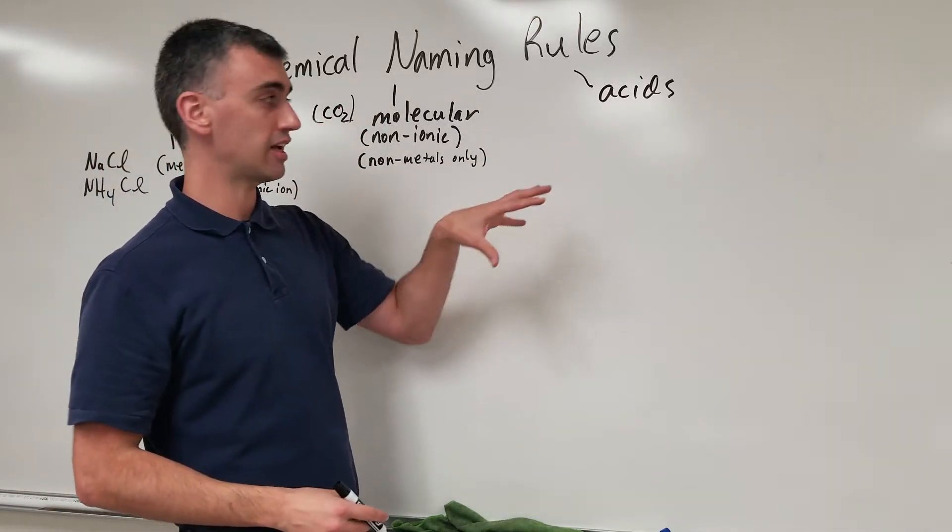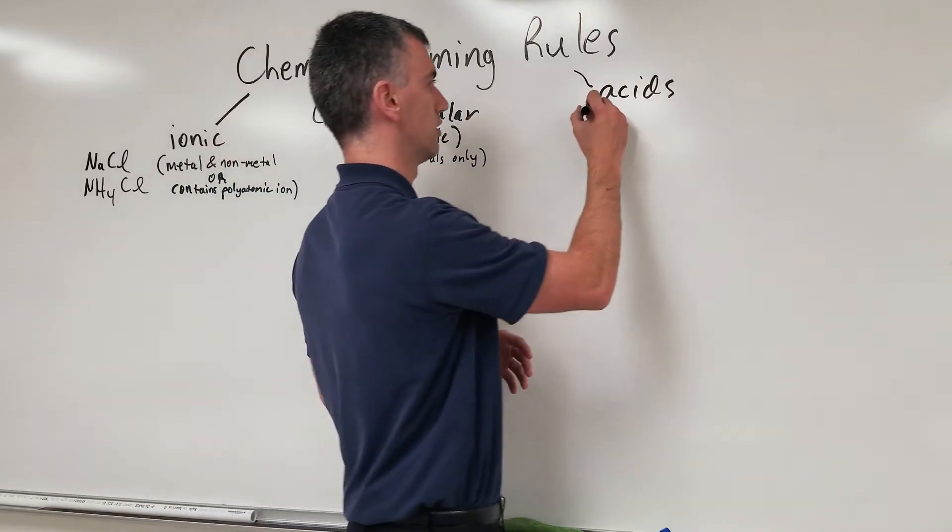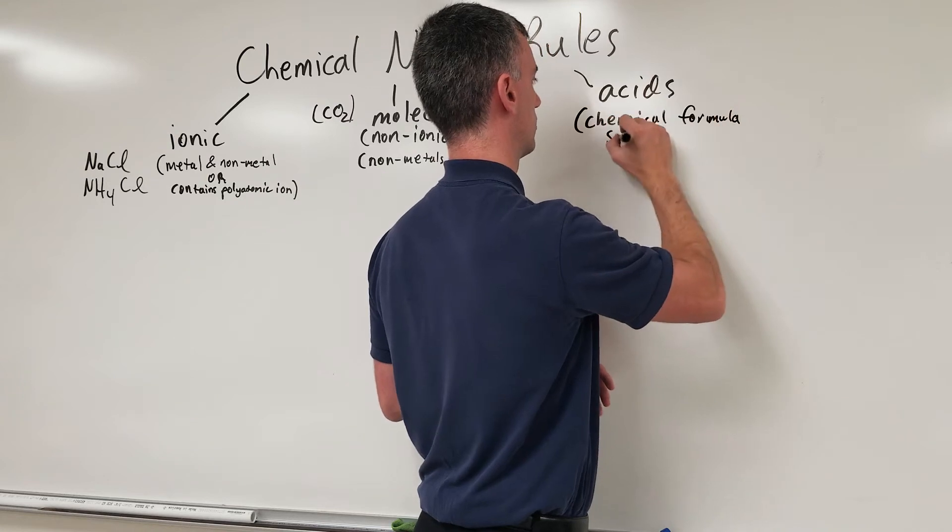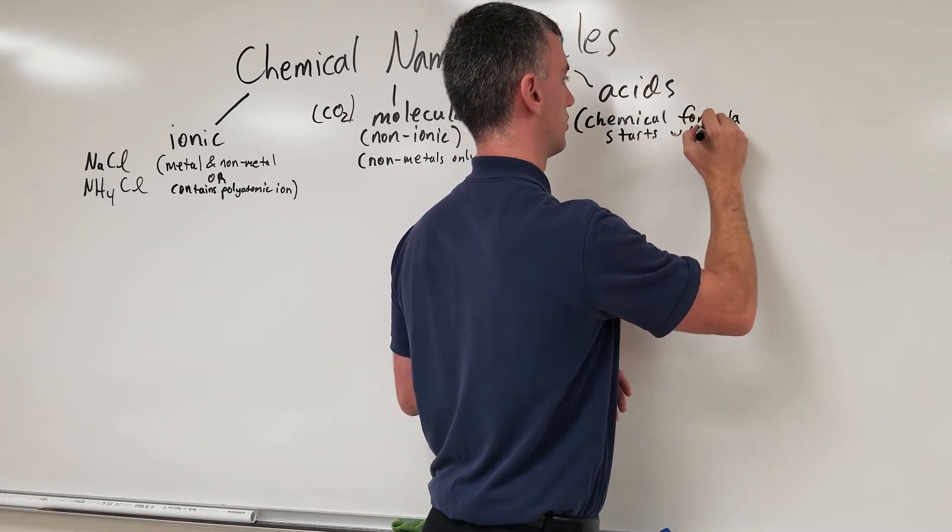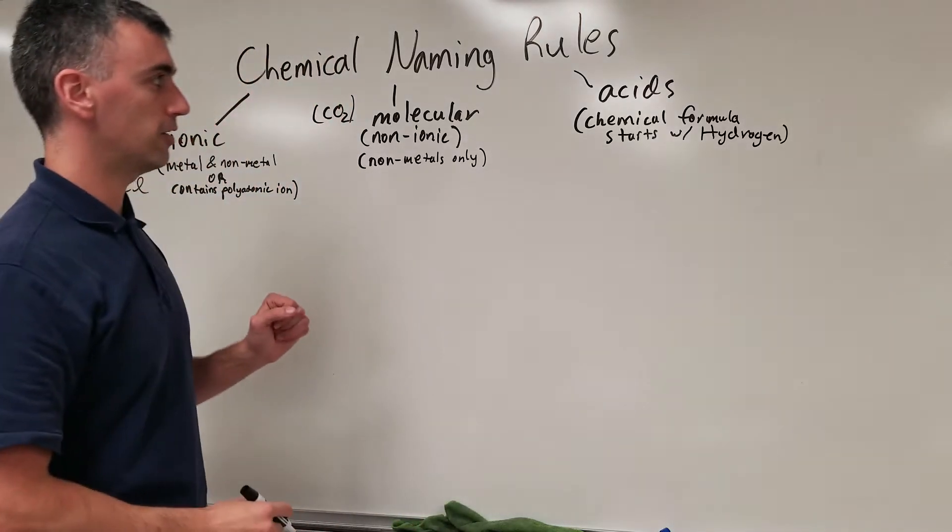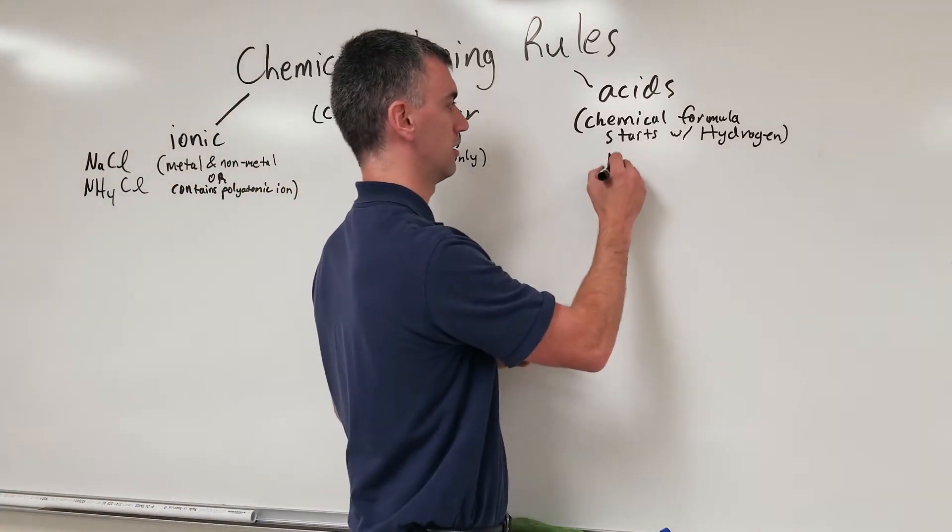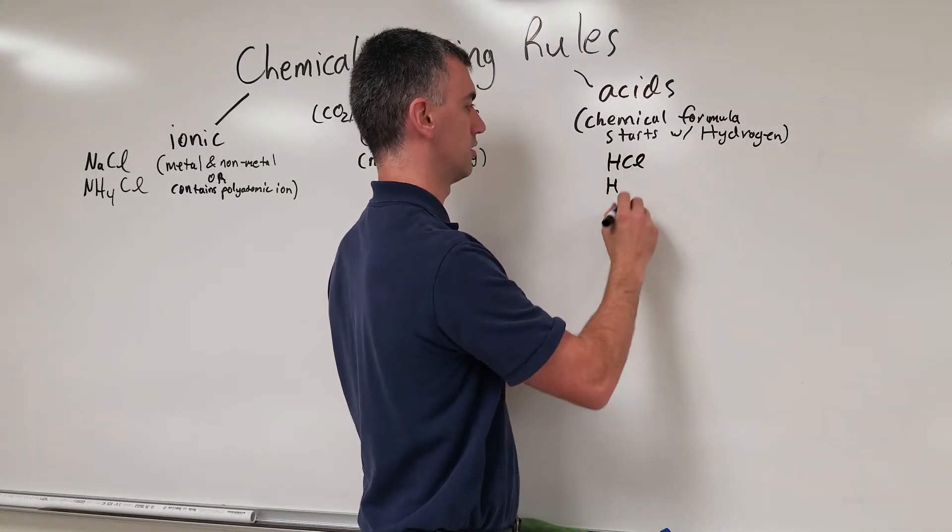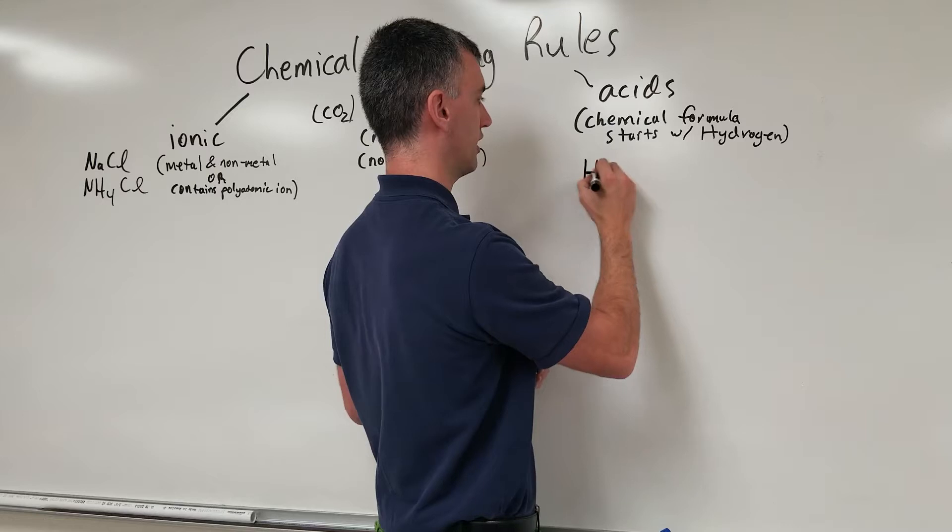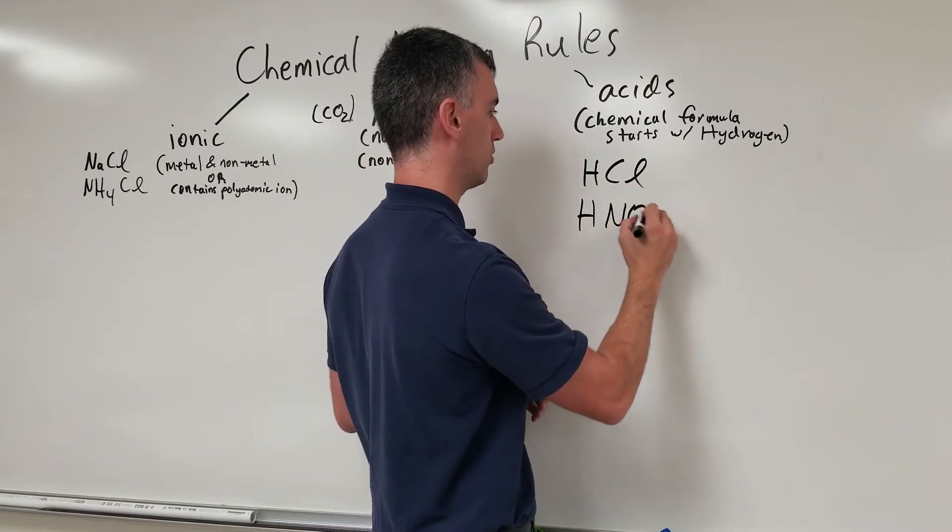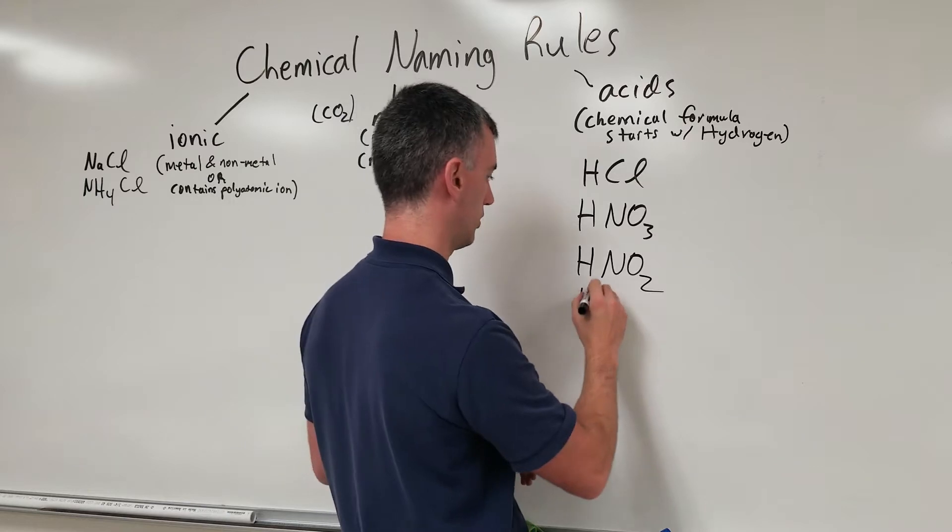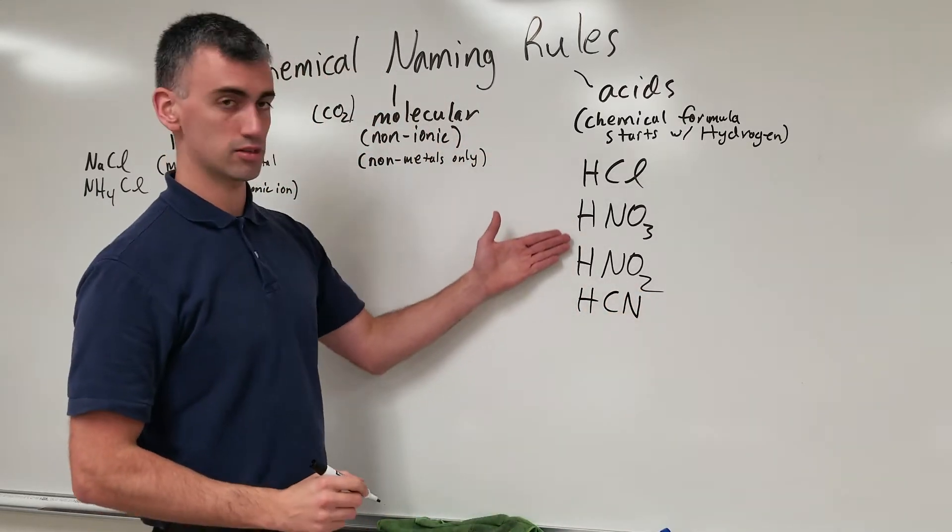Acids, you can recognize an acid because typically, and there are exceptions, but typically the chemical formula starts with hydrogen. Examples of acids would be like HCl, or HNO3, or HNO2, or HCN. All acids, notice what they have in common.